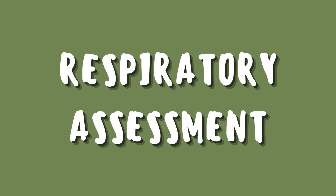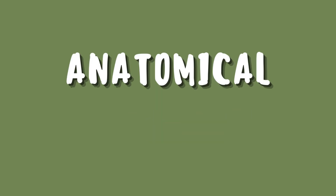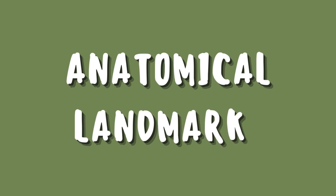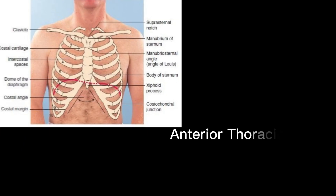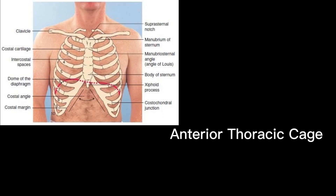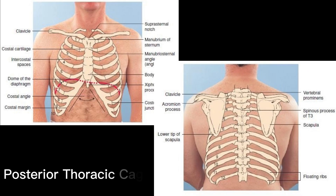Before that, we would learn about the important anatomical landmarks for this assessment. First, we have the anterior thoracic cage, then the posterior thoracic cage.